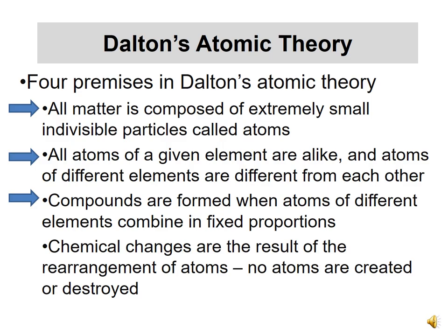His third premise is that compounds — chemical combinations of two or more elements — are made when atoms of different elements combine in fixed proportions. For example, CO2 has one carbon and two oxygen atoms; H2O has two hydrogen atoms and one oxygen atom. Importantly, when you carry out a chemical change you don't create or destroy atoms — you just rearrange how they're connected to each other. This explains the law of conservation of mass: if you start with X number of atoms as reactants, your products are the same atoms just combined differently, so their mass is the same.